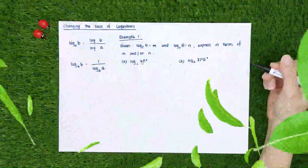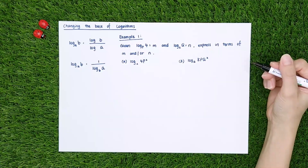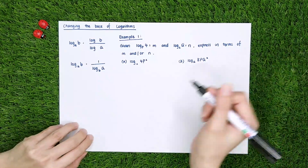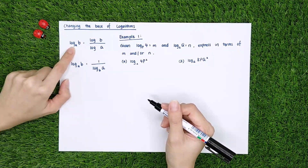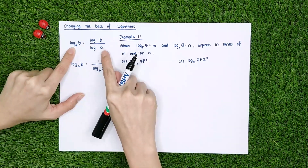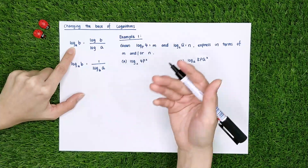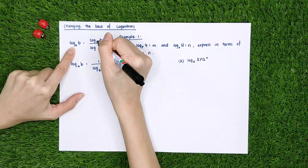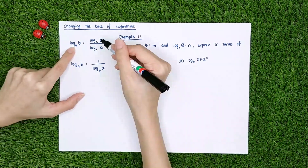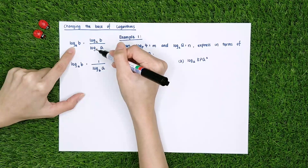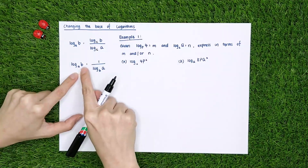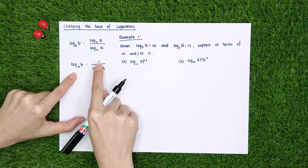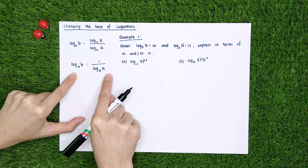In this sub-topic you also need to know about changing the base of a logarithm, which is useful when solving equations. log_a(b) = log_c(b) / log_c(a), where you can choose any base c, but the numerator and denominator must use the same base. Also, if you want to change b to become the base, you can invert it: log_a(b) = 1 / log_b(a).